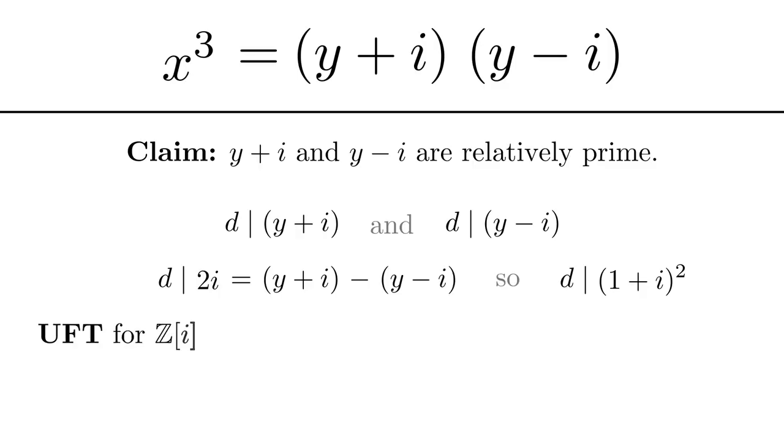It's at this moment that something very exciting happens. We'll invoke unique factorization for the Gaussian integers Z[i]. So d divides (1+i)² and we have unique factorization, so up to units, d is either 1, 1+i, or (1+i)².